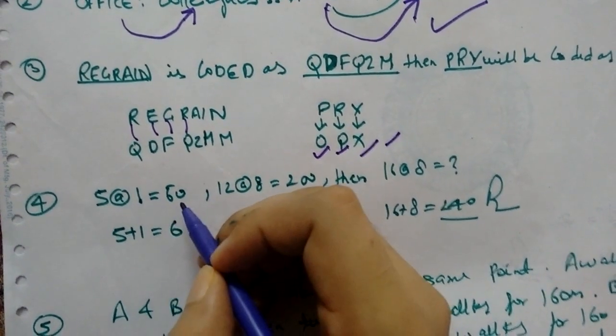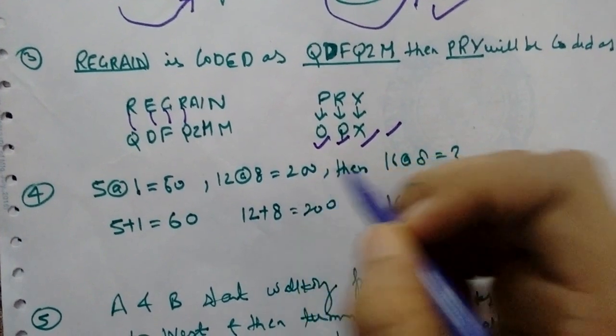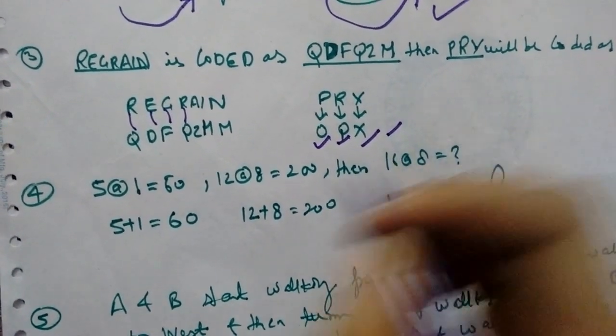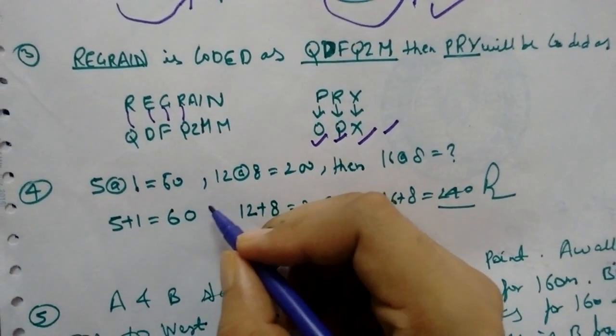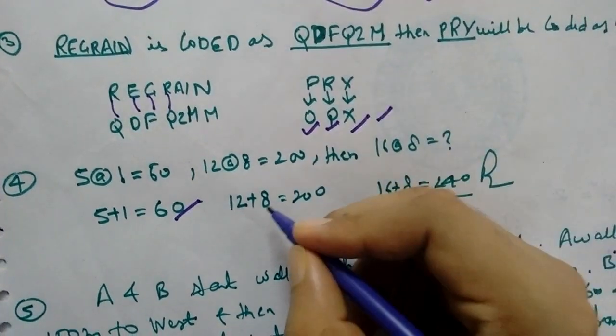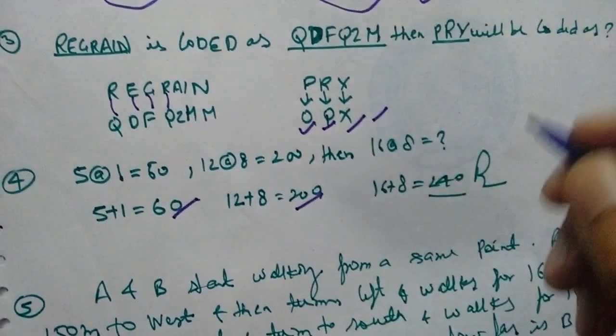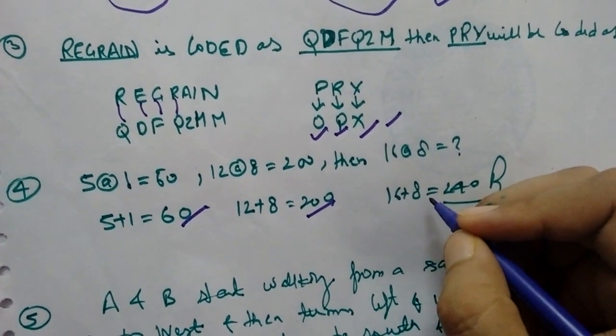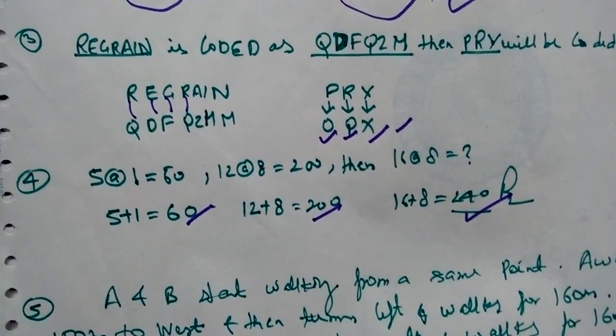S at the rate 1 equal to 60, 12 at the rate equal to 200, then 16 at the rate 8 equal to? So 5 plus 1 is 6 and last zero, 60. 12 plus 8 is 20 last zero, 200. 16 plus 8 is 24 last zero, 240. That will be the answer.